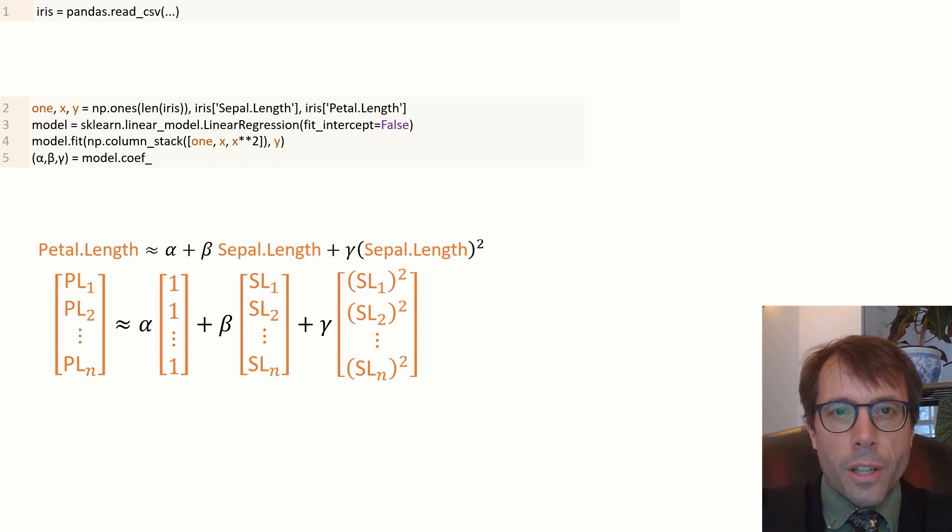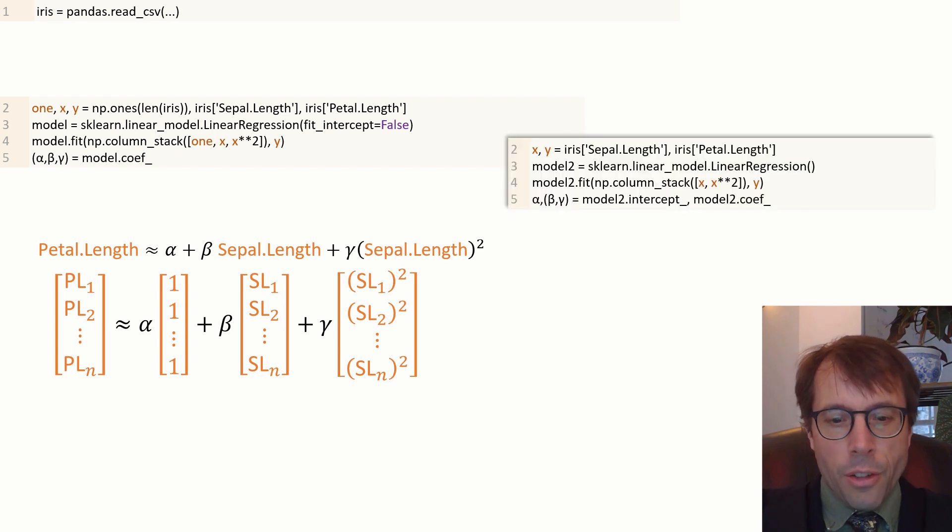Line three has this funny argument in it, fit intercept equals false. It's there because we nearly always want a one feature vector in our models, so this routine puts it in by default unless we explicitly tell it otherwise.